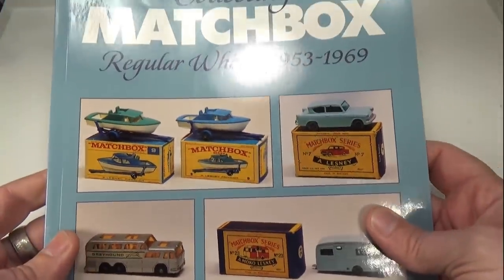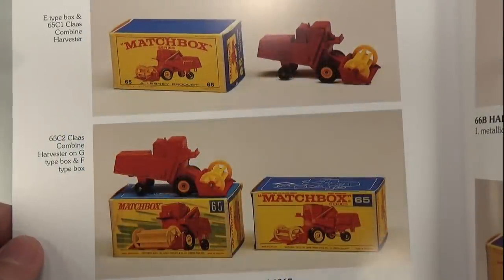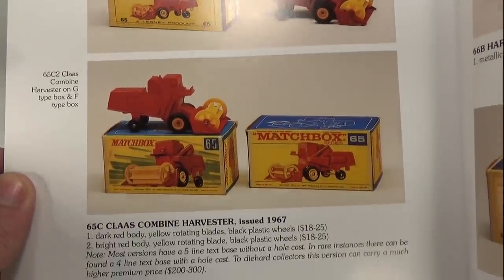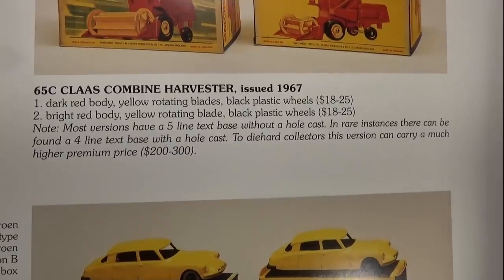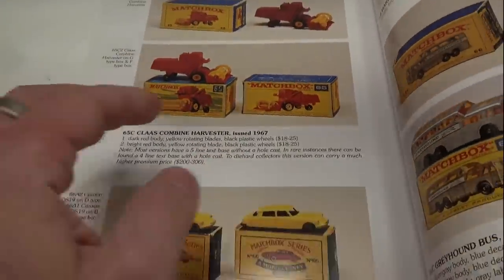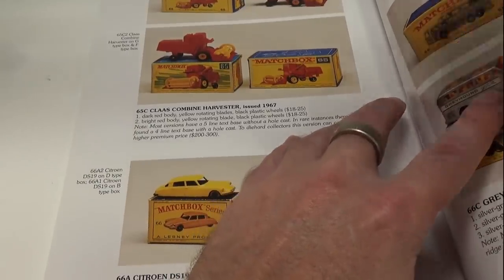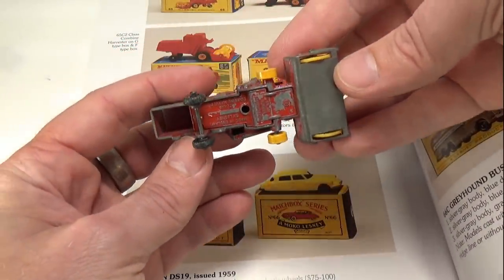According to my Matchbox Bible, the harvester came in two color variations, a dark red and a bright red. This one seems to be the bright red. Very early versions had five lines of text and no hole cast into them. Later versions like this one had four lines and a hole cast.